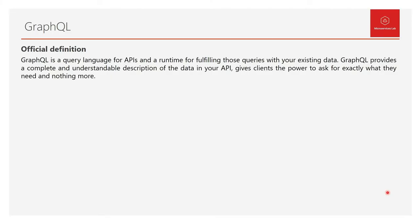Let us begin with the official definition of GraphQL. GraphQL is a query language for APIs and a runtime for fulfilling those queries with your existing data. GraphQL provides a complete and understandable description of the data in your API, and gives clients the power to ask for exactly what they need and nothing more.